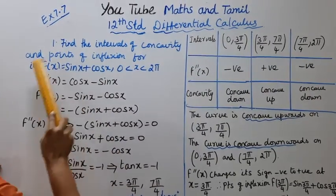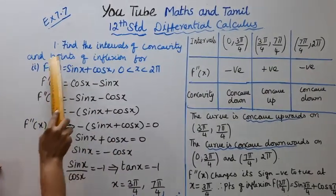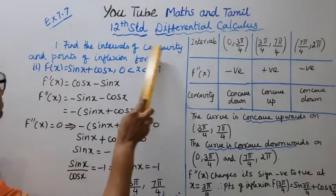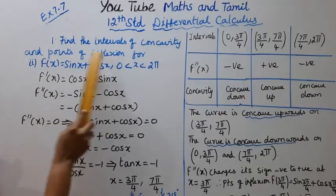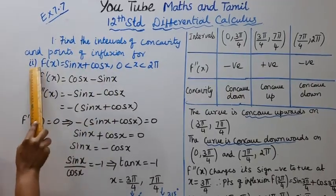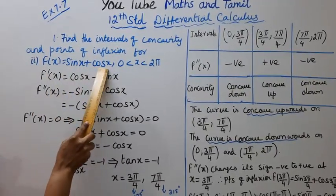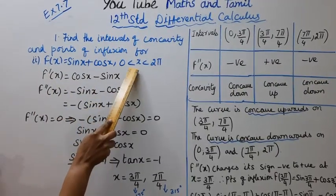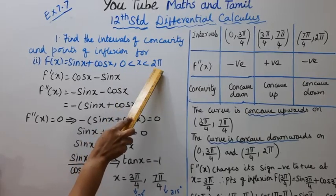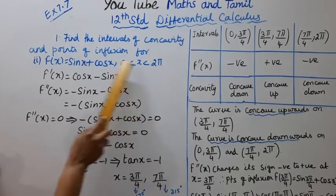First is the second substitution. Find the intervals of concavity and points of inflection for f(x) = sin x + cos x, where 0 < x < 2π.